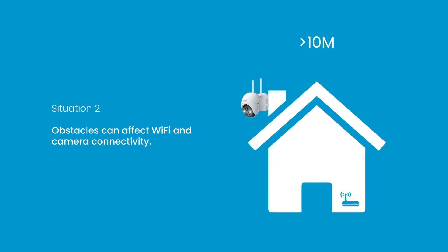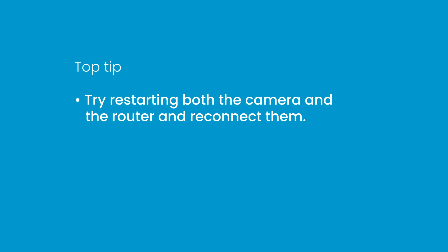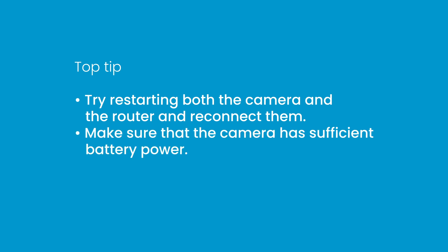Situation 2: If the distance between the router and the camera is more than 10 meters and there are many obstacles such as physical walls in between, the Wi-Fi may be unstable and prone to dropping offline. In a pure environment the distance can reach up to 15 meters, but in actual usage scenarios it is suggested that the distance should not exceed 10 meters. Top Tips: Try restarting both the camera and the router and reconnect them. Make sure that the camera has sufficient battery power. Note the presence of multiple Wi-Fi signals in one space.